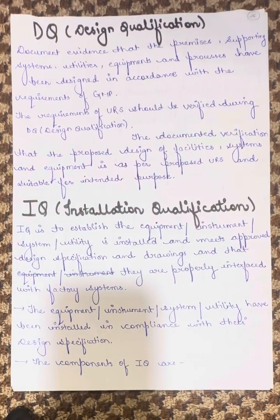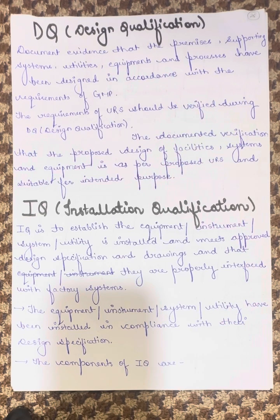DQ stands for Design Qualification, where document evidence that the premises, supporting system, utilities, equipments and the processes have been designed in accordance with the requirement of GMP. The requirement of URS should be verified during the DQ, during the design qualification.